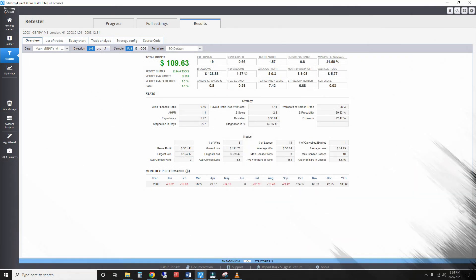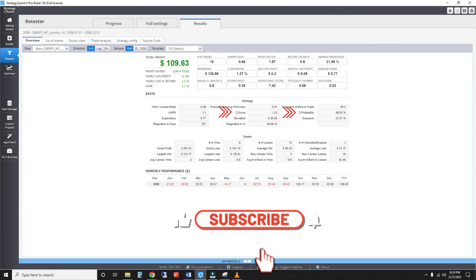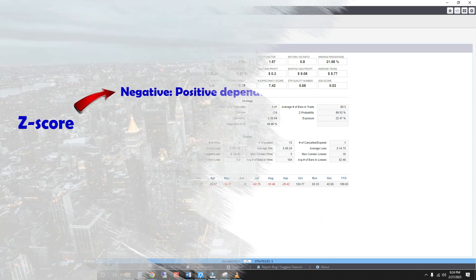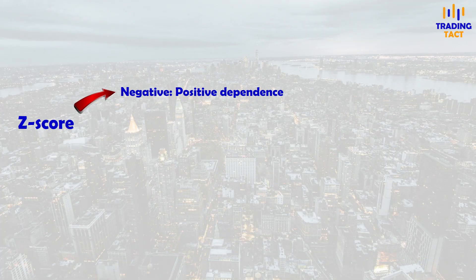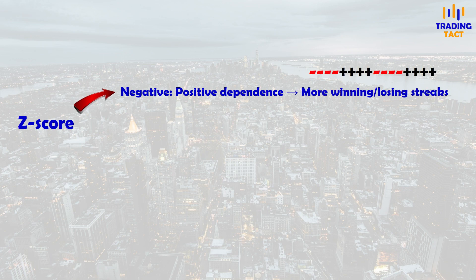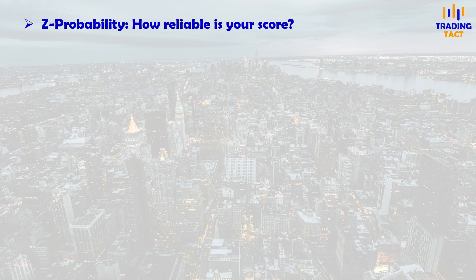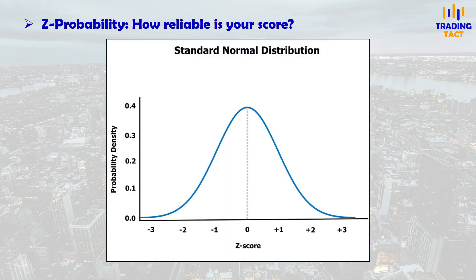There are two things to focus on: the sign of your Z-score and the Z-probability. Your Z-score can be positive or negative. A negative Z-score implies a positive dependence, meaning a profit will likely be followed by a profit and a loss be followed by a loss. Conversely, a positive Z-score implies negative dependence, meaning your wins and losses will likely alternate. Just as importantly, the Z-probability determines how reliable your Z-score is, and here is where our good old friend, the normal distribution, comes in.